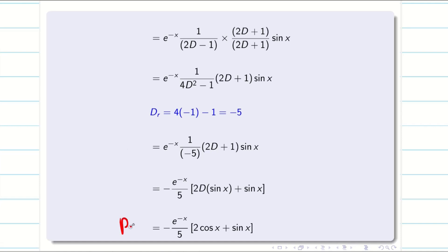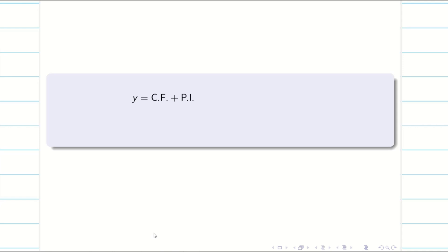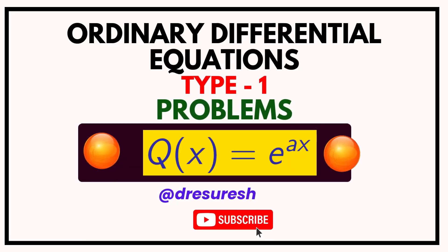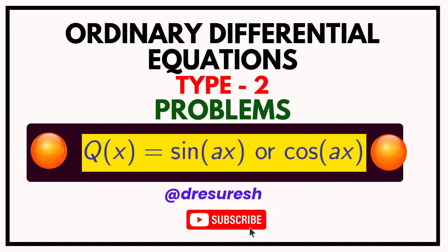Now the PI is complete. The final solution is y = A·e^(−x) + B·e^(−3x) − (e^(−x)/5)·(2cos x + sin x). I hope from these two solved problems you will have full confidence to face any exam problems. Thanks for watching. Subscribe to our channel and share with your friends. See you in the next video. Bye-bye.